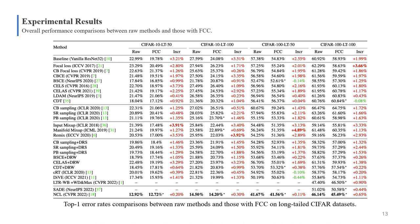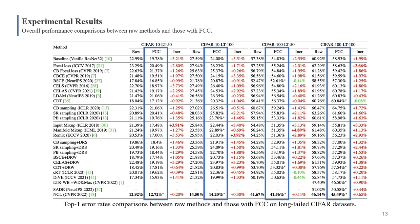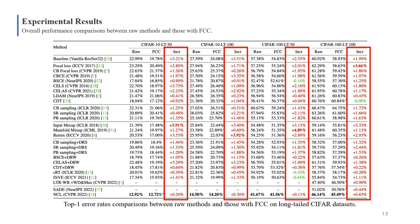Here is top-1 error rate comparisons on long-tail CIFAR datasets. These columns are the performance of raw methods, and these are the performance of those methods with FCC. Here is the increased performance. In 98 experimental groups, FCC significantly improves 94 of them by an average of 1.55%.